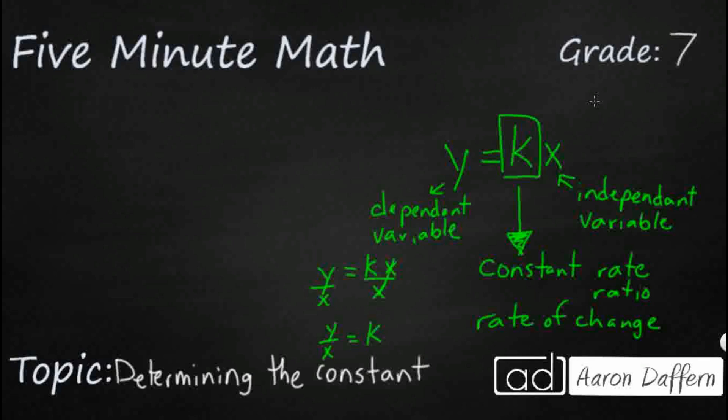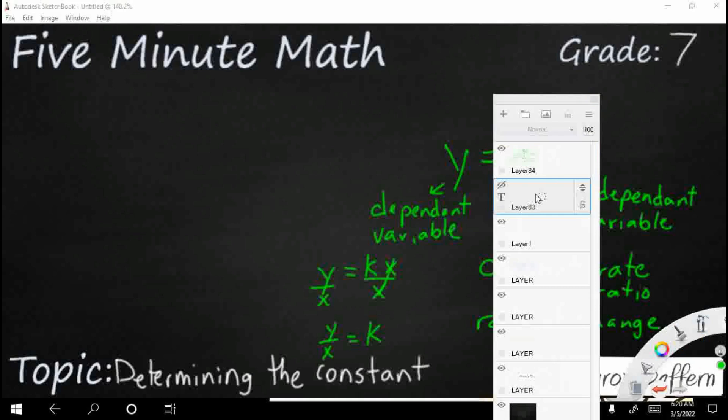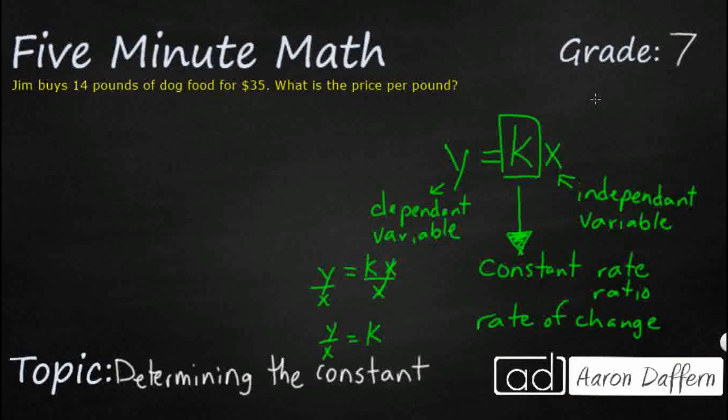Now how does that work with a real example? Let's go ahead and take a look. Let me grab a problem that's been hiding here for us. This problem gives us a very simple problem situation. Jim buys 14 pounds of dog food for $35. What is the price per pound? All right. So let's put this into our y equals kx.